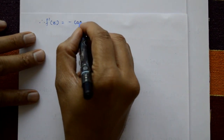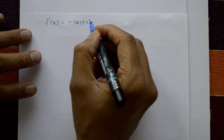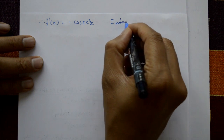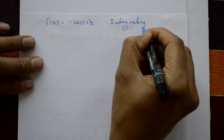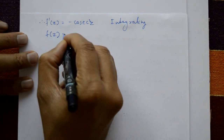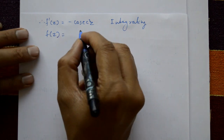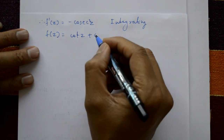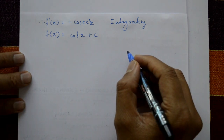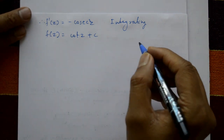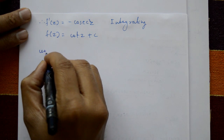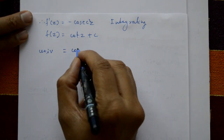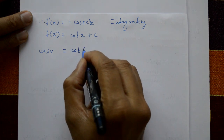Since 1/sin²(z) = cosec²(z), f'(z) = -cosec²(z). Integrating both sides: f(z) = cot(z) + C.